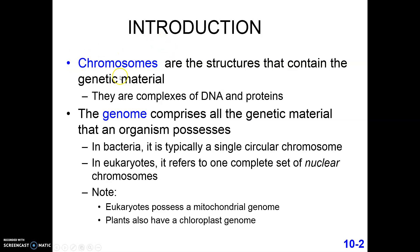We use the word chromosome to refer to the structures that contain all of the genetic material. While this chiefly contains DNA, recognize that this DNA is a complex with many different proteins. The genome comprises all of the genetic material in an organism. In bacteria, the entire genome is typically housed in one singular circular chromosome — a piece of DNA that doesn't have a beginning or an end; it forms a loop or a circle.